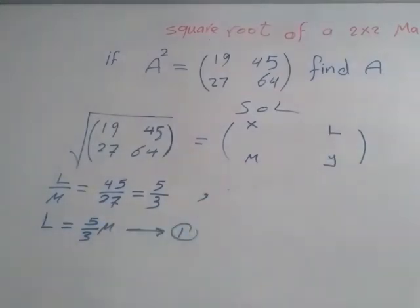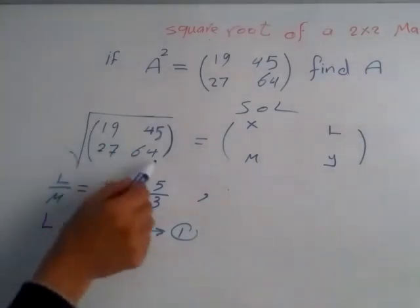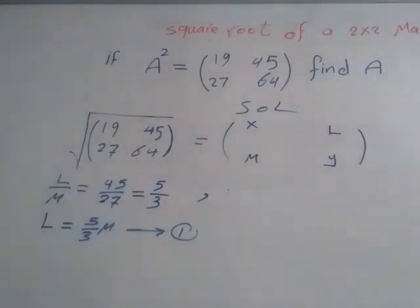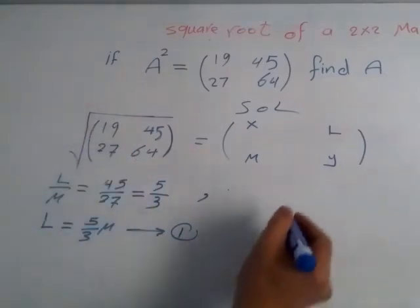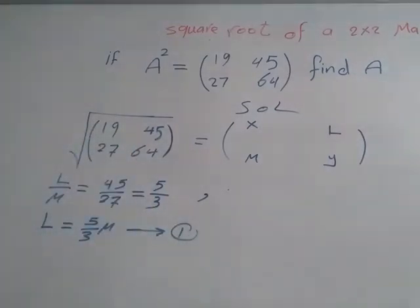Two unknowns, we must need another equation. So this is one. The other one is going to come from the other main diagonal. Take the 19 and 64, here is the 19.